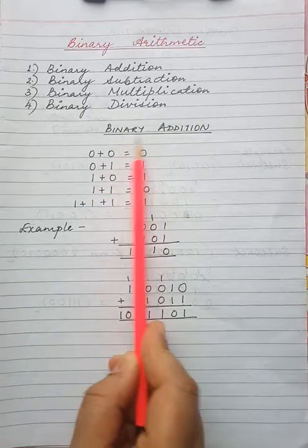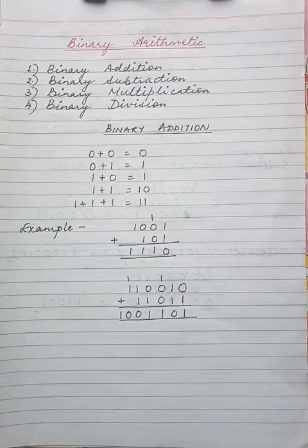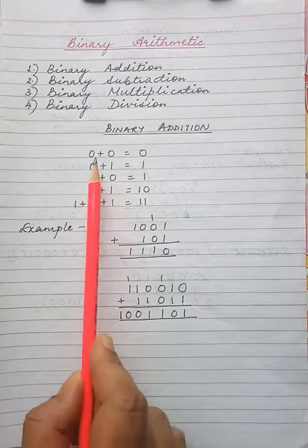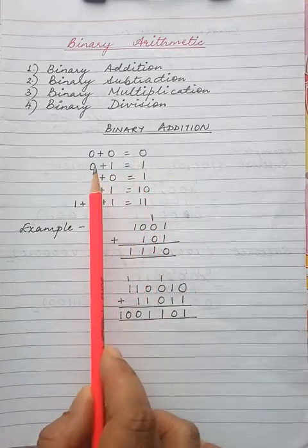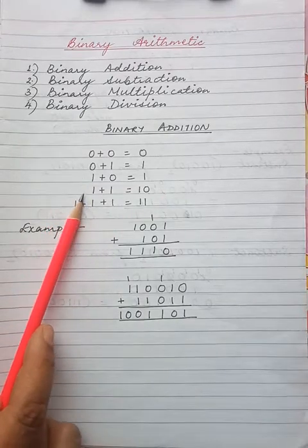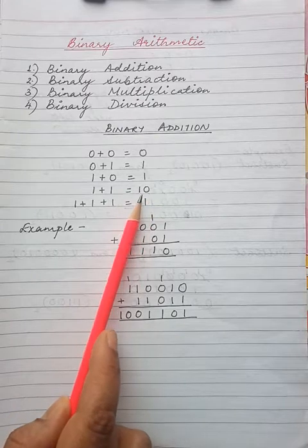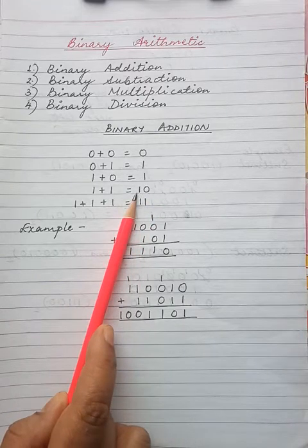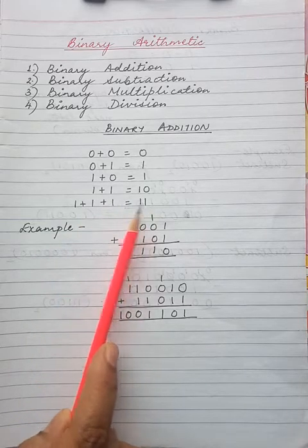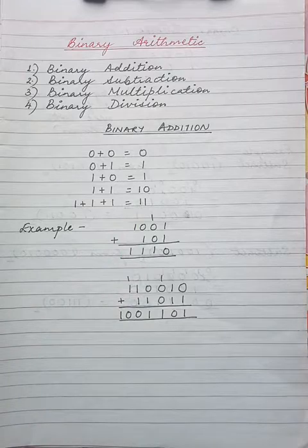First is binary addition. Binary addition is performed in the same manner as decimal addition. Binary number system has two digits, 0 and 1, and the addition table of binary arithmetic is very simple. The rules are: 0 plus 0 equals 0, 0 plus 1 equals 1, 1 plus 0 equals 1, and when 1 is added to another 1, we get 0 as the sum and 1 is taken as carry to the left-hand side. Similarly, when three 1s are added, we get 1 as the sum and 1 is taken as carry to the left-hand side.